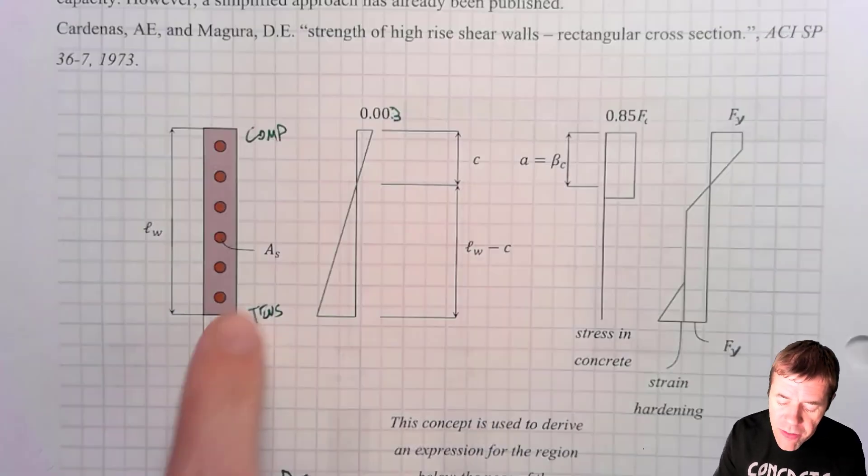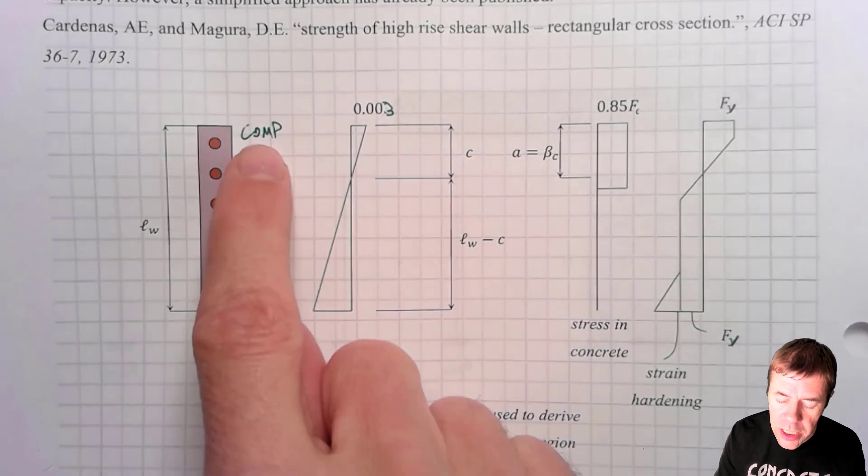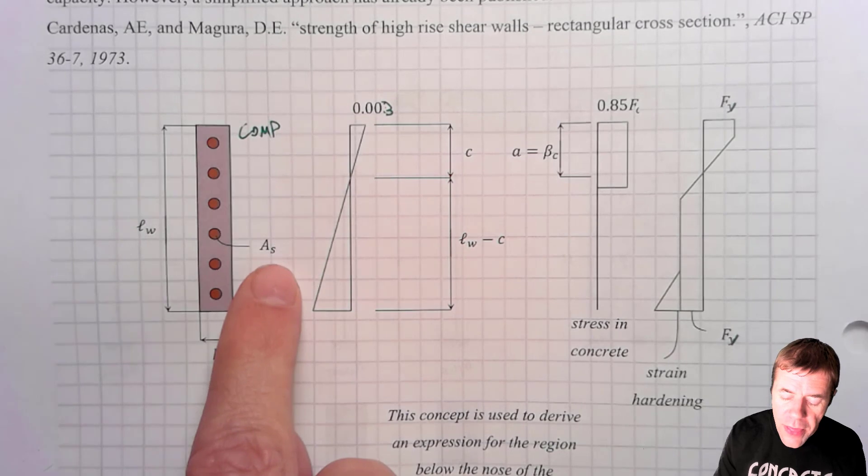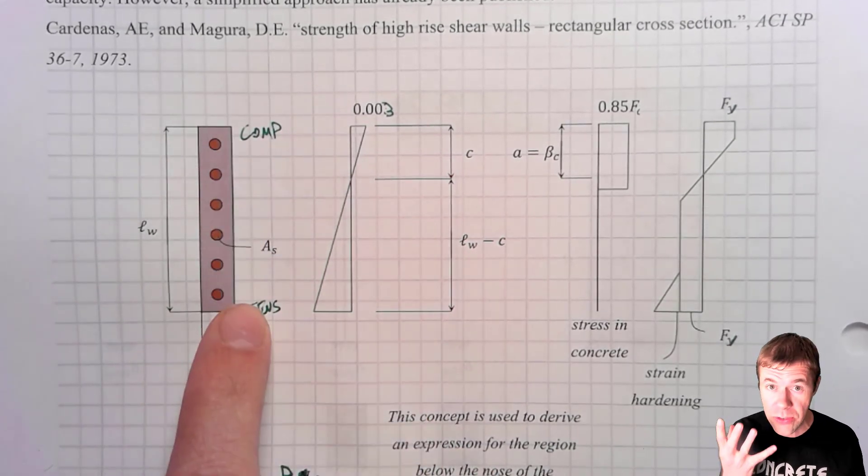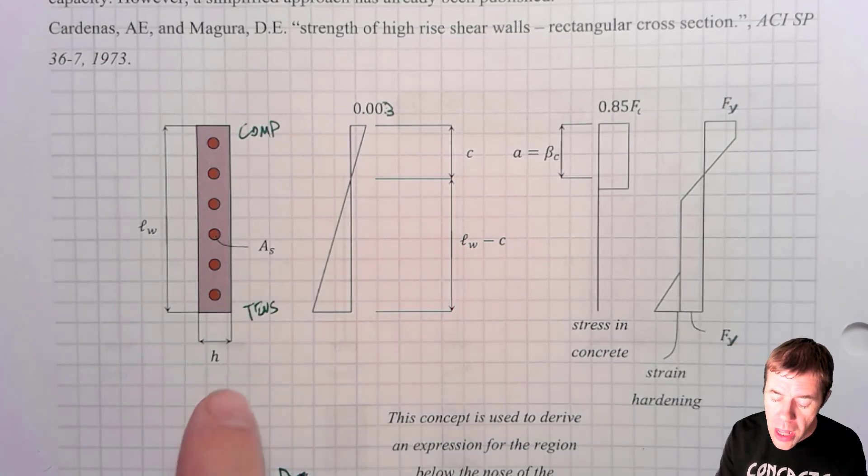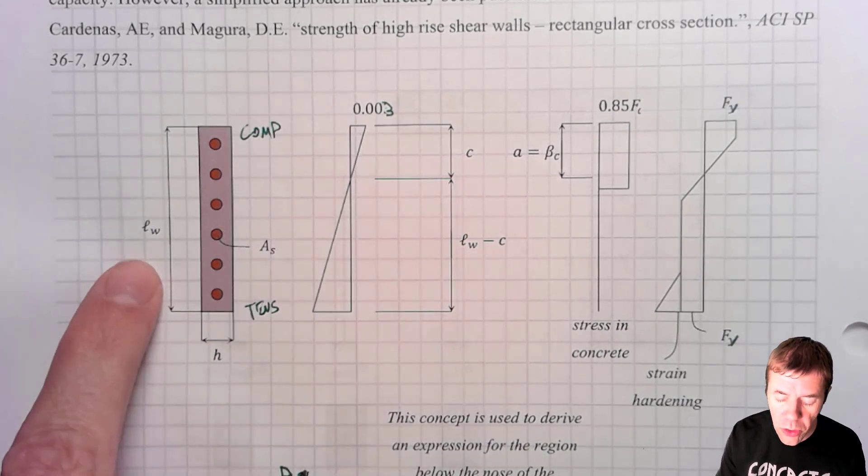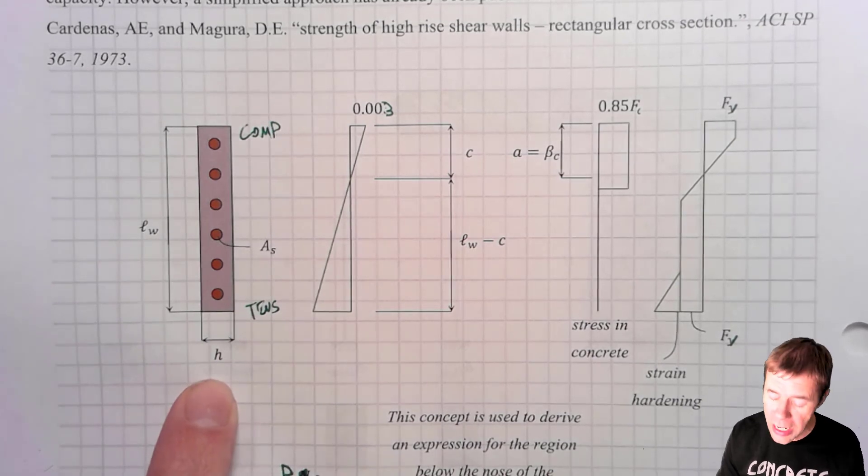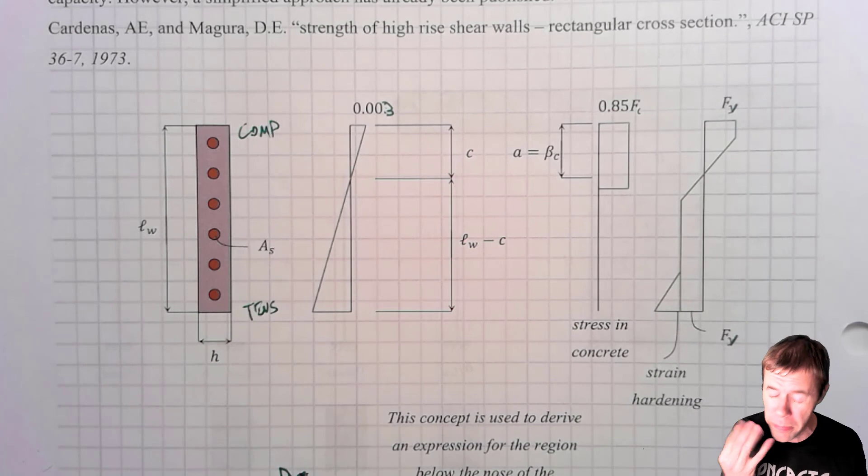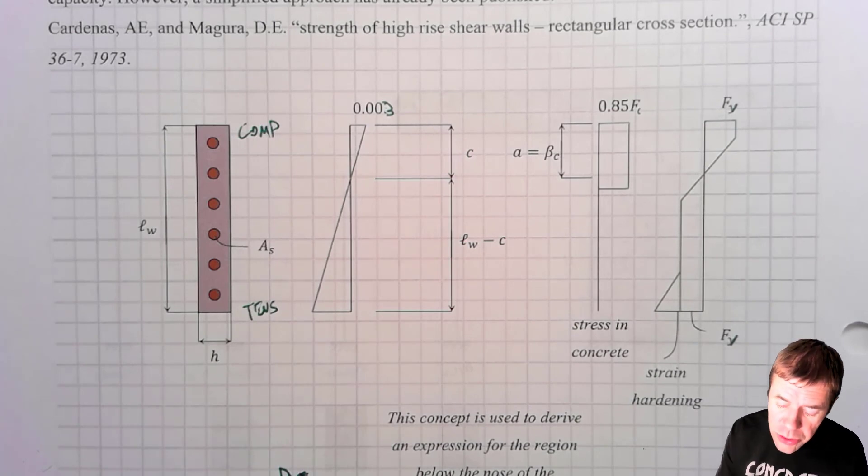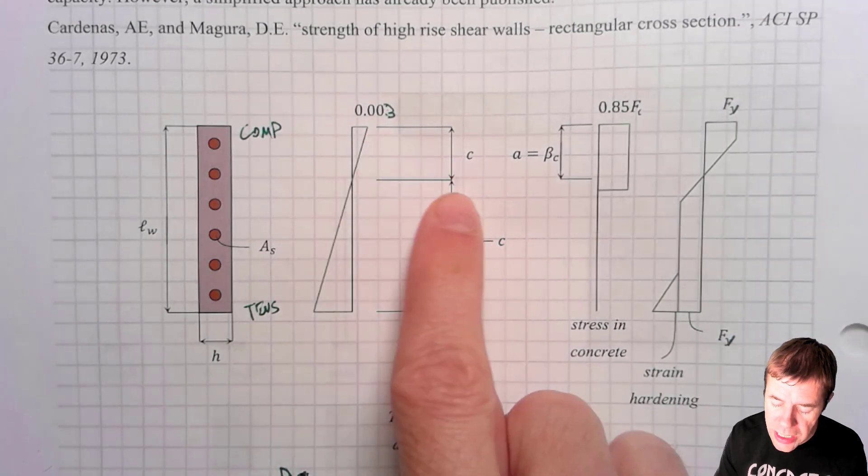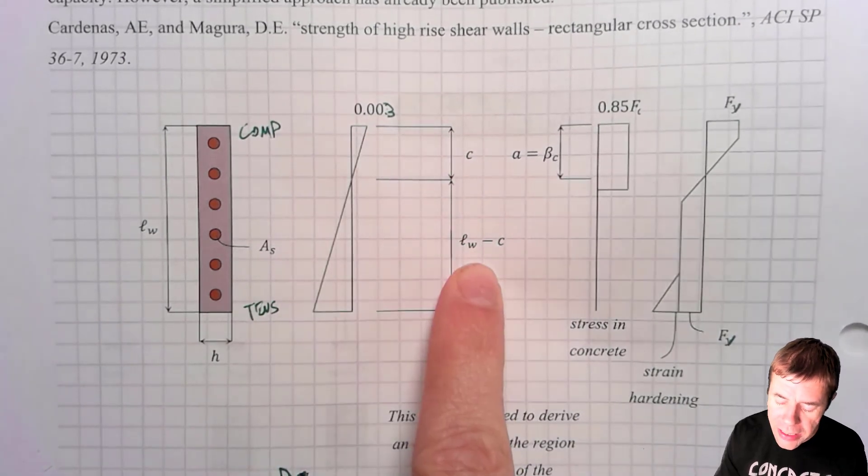We're going to use a simplified approach by Cardenius and Magura. I've got the title here and the ACI special publication that you can track it down yourself. It's an oldie but a goodie. What it does is it says, I'm going to have a very long wall. It's going to have a part that's going to be in compression, a part that's going to be in tension. And I'm going to have steel that's uniformly distributed throughout the wall.